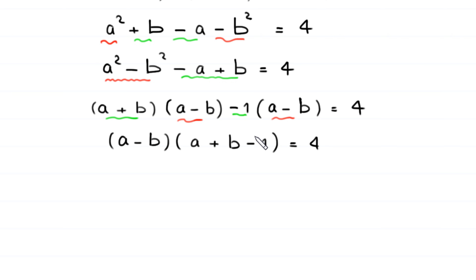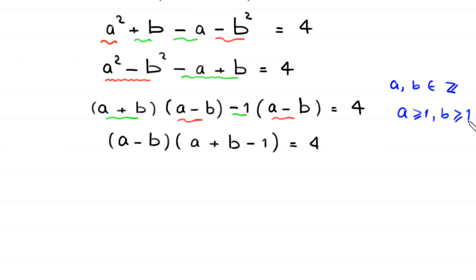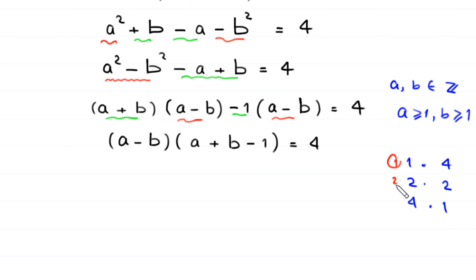Now we have a product of two factors on the left-hand side, and since a and b are positive integers — a greater than or equal to 1 and b greater than or equal to 1 — this 4 can be factorized as 1 times 4, 2 times 2, and 4 times 1. This means we have three cases.